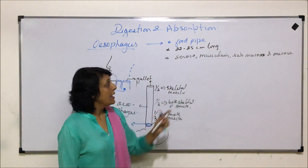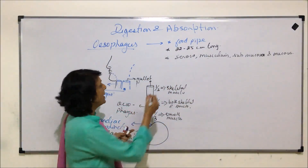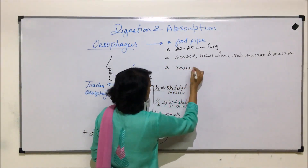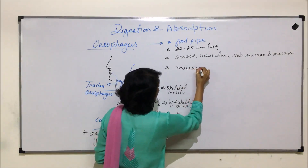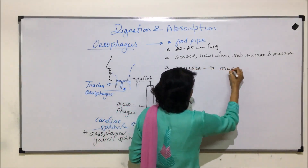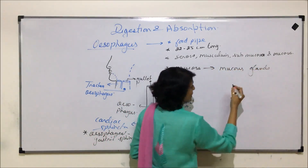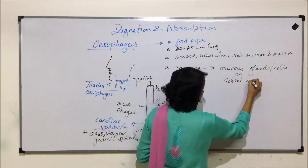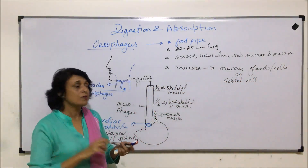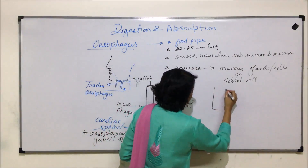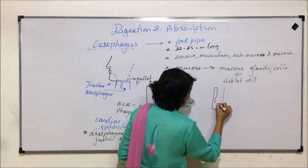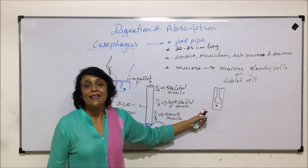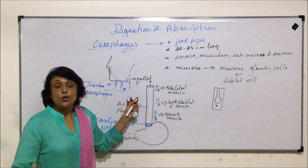The mucosa layer has mucus glands and goblet cells. These cells are called goblet cells because their structure looks like a goblet. The cells are columnar cells, and the glands look like a goblet shape, which is why they are called goblet cells.